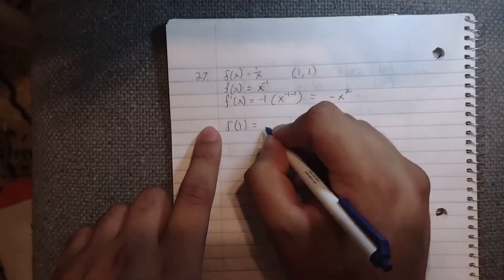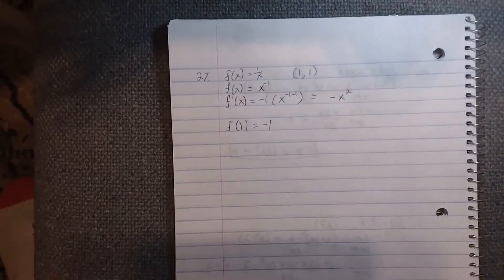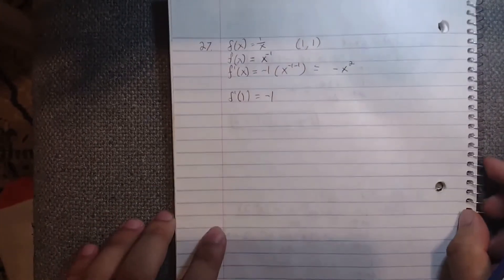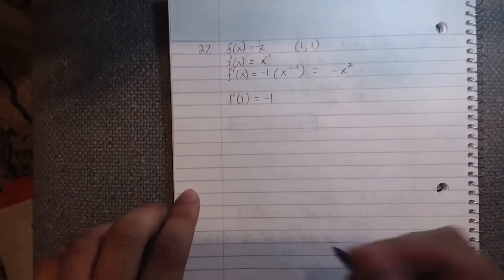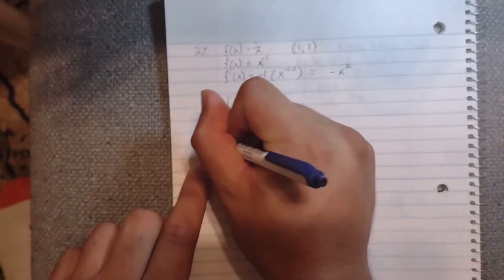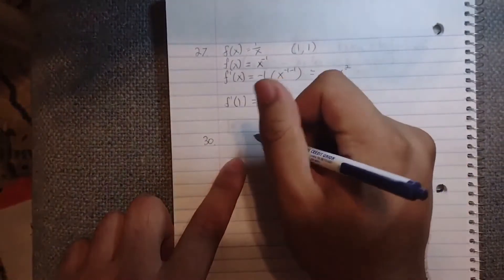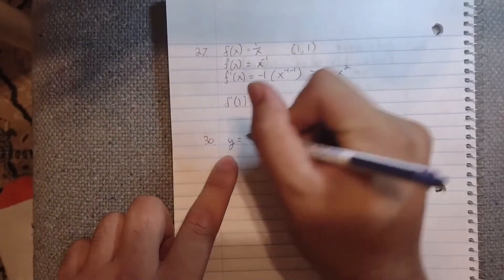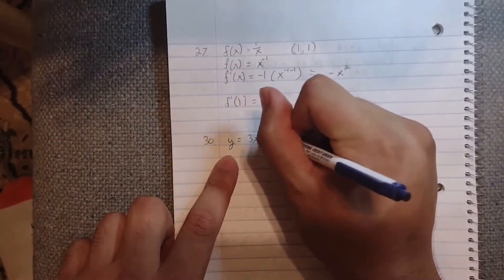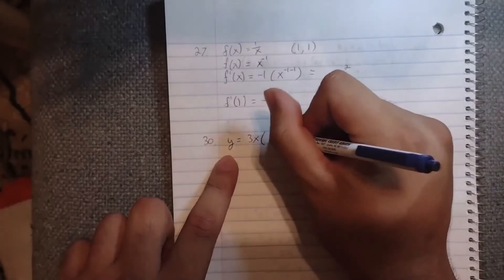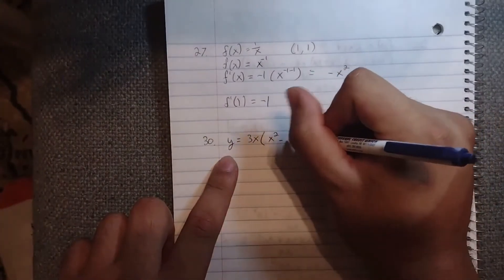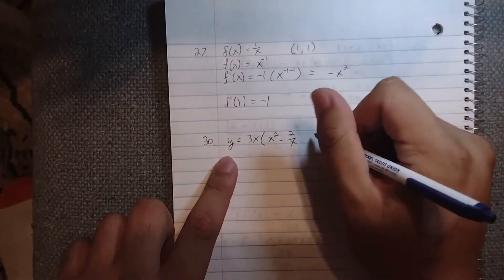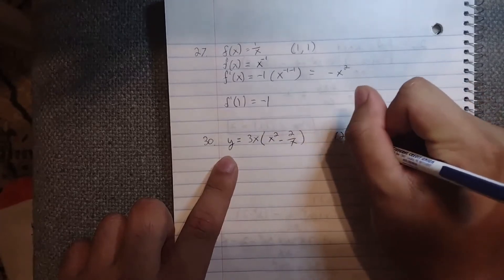Let's do another example. Let's do number 30 from that page. That was y = 3x(x² - 2/x) at the point (2, 18).